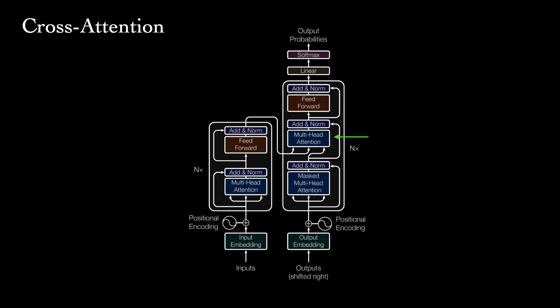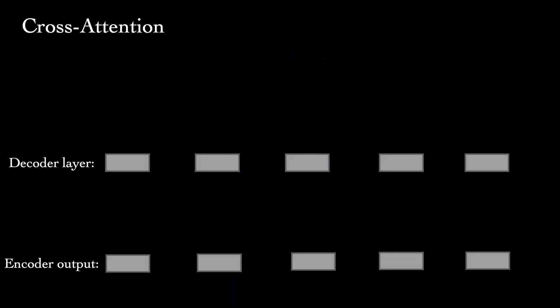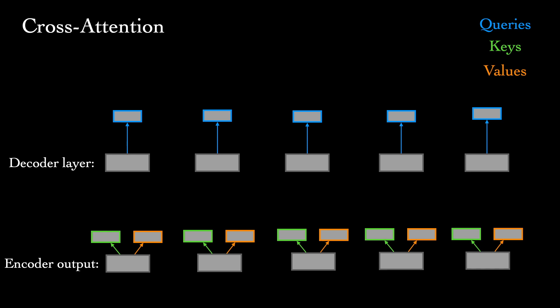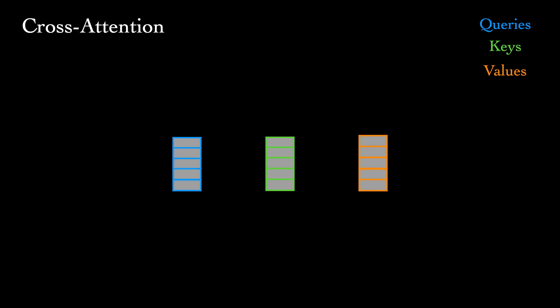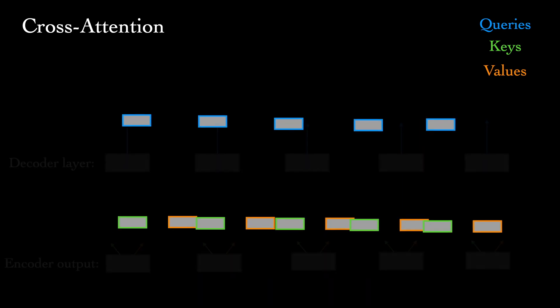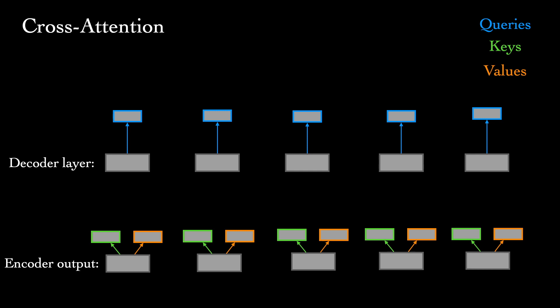The attention blocks we've seen so far implemented self-attention, where the queries, keys, and values all came from the same sequence—the source sentence for the encoder, and the target sentence for the decoder. This third attention block implements what's called cross-attention, or encoder-decoder attention. The vectors do not all come from the same sequence. Here, the queries come from the previous layer of the decoder, but the keys and values come from the final output of the encoder. During deployment, this allows the decoder to attend not only to the tokens sampled so far, but also to the input sequence. This is crucial if we want our output to actually condition on the input—for example, having a French output sentence actually correspond to some English input.